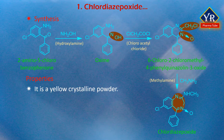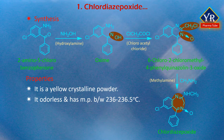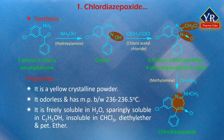Chlordiazepoxide is a yellow crystalline powder or light yellow plates. It is odorless and has a melting point between 236 to 236.5 degrees centigrade. It is freely soluble in water, sparingly soluble in ethanol, and insoluble in chloroform, diethyl ether and petroleum ether. It degrades in aqueous solutions to form benzophenone. When heated to decomposition, it emits very toxic fumes of nitrogen oxides.